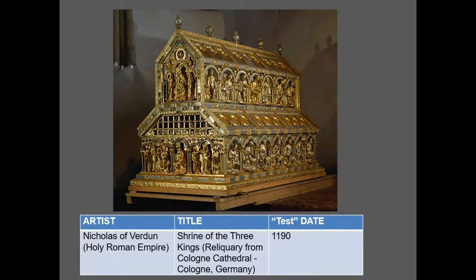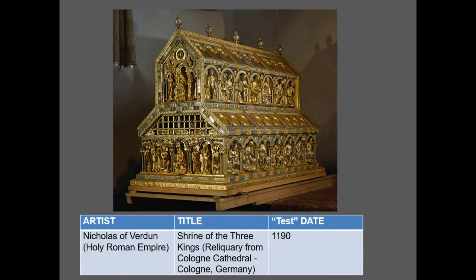The Holy Roman Empire continues, and we have from roughly 1190 into the 1200s a reliquary for the Three Kings — housing crowns worn by the three kings of the Nativity story. Peter Parler and the Parler family were well-known architects in the Holy Roman Empire, specifically in Germany, and their work had a significant influence on 1300s architecture. The Church of the Holy Cross is what we call a hall church — the side aisles are almost exactly the same height as the nave. The most incredible feature is the vaulting, which divides each bay into 18 subsections, creating a remarkably intricate series of ribs and vaults for a decorative effect.